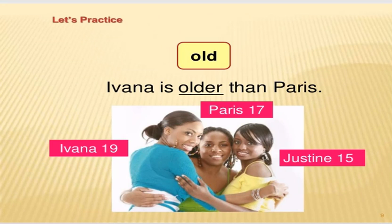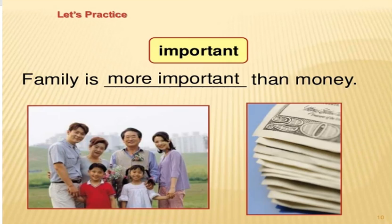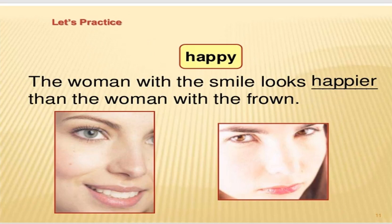Let's look at examples. Ivana is older than Paris. Paris is 17, Justin is 15, Ivana is 19 — it means Ivana is older than Paris. Family is more important than money. Ailə puldan vacibdir. İki müqayisə var: ailə və pul. Which is more important? Hansı daha vacibdir? The woman with a smile looks happier than the woman with a frown.